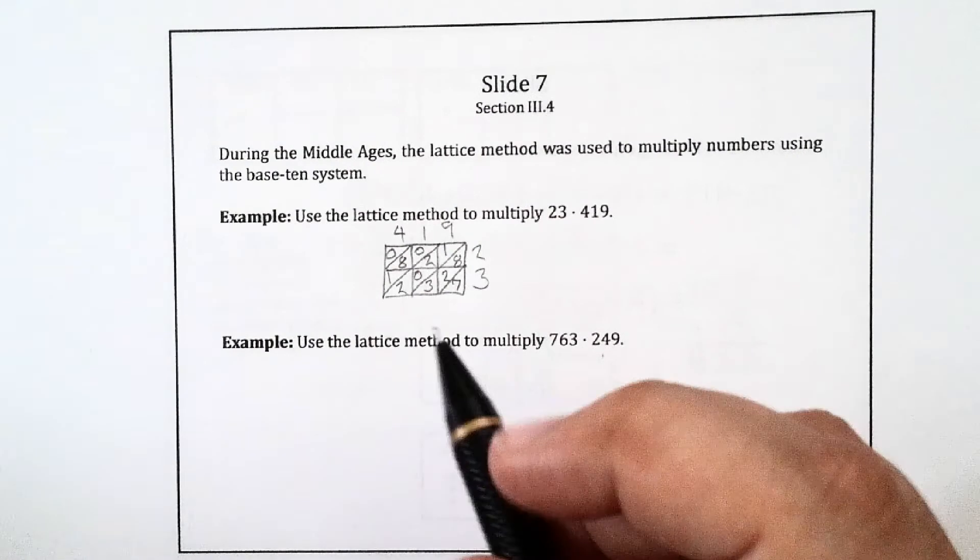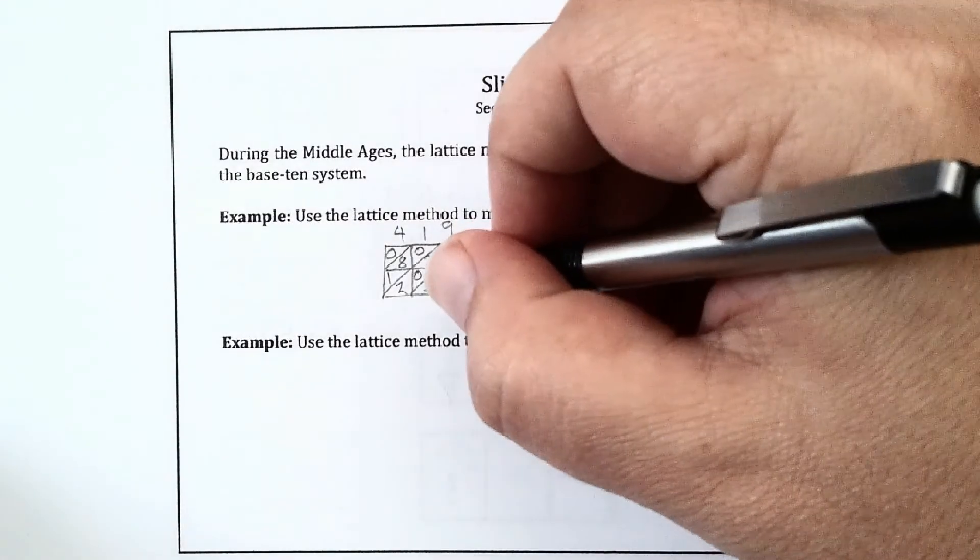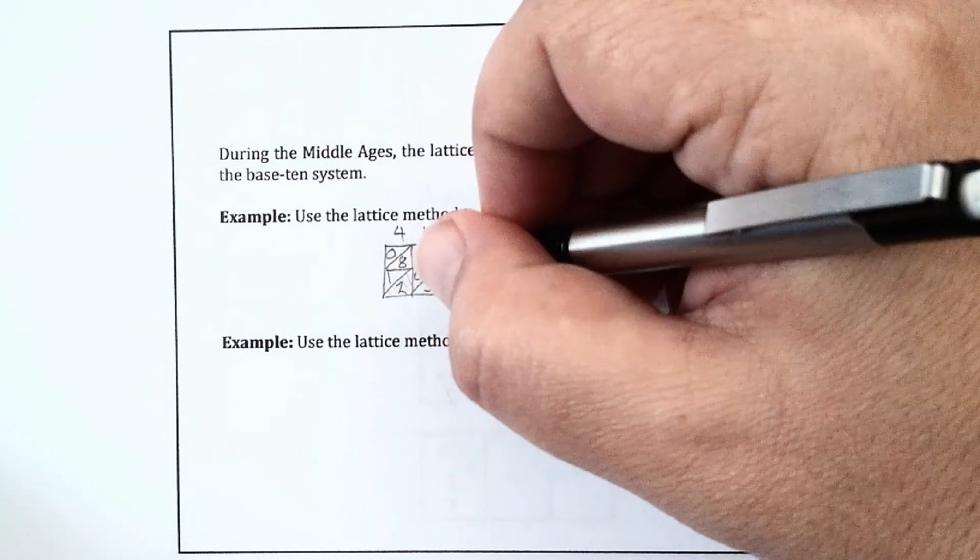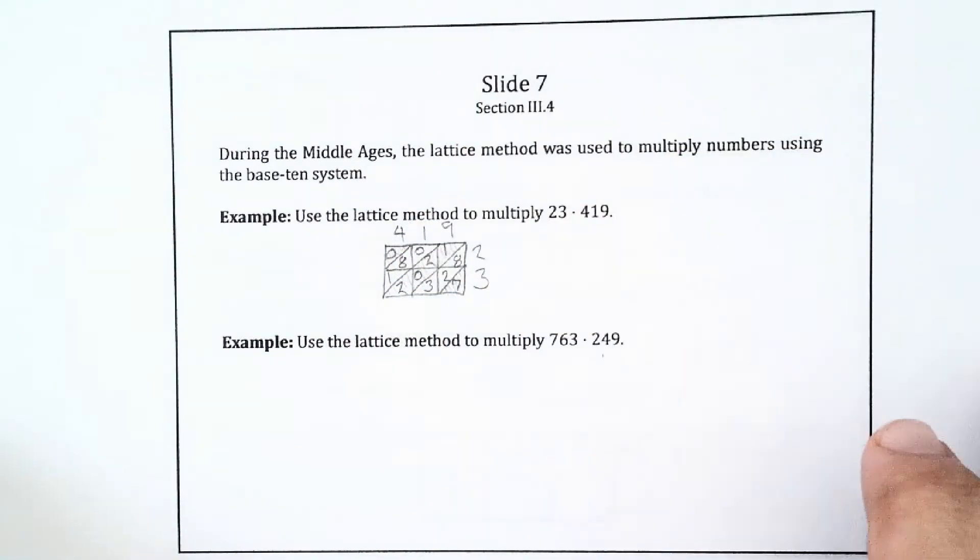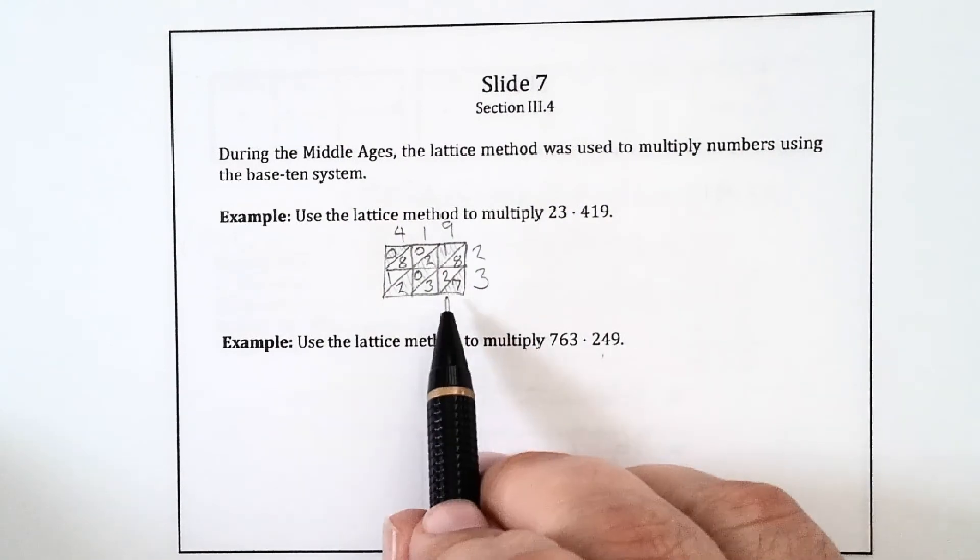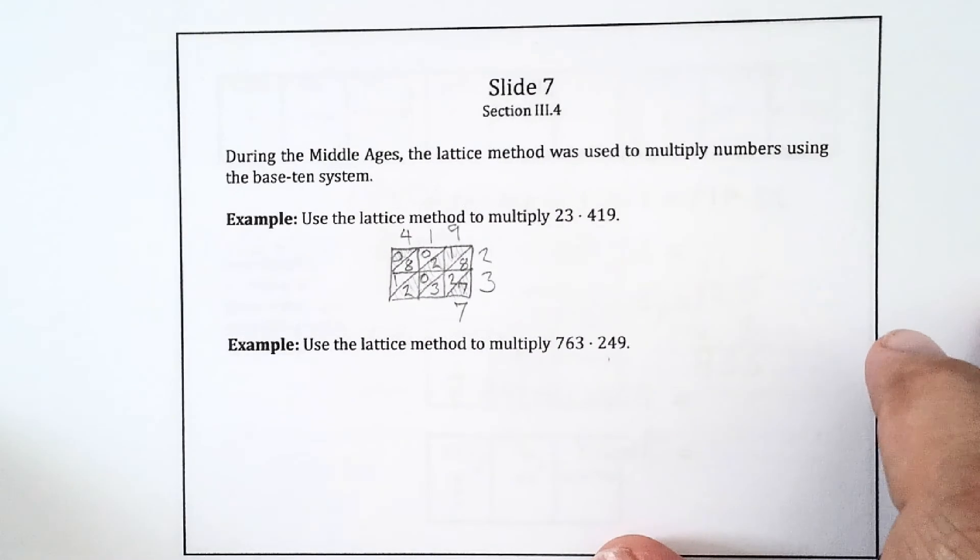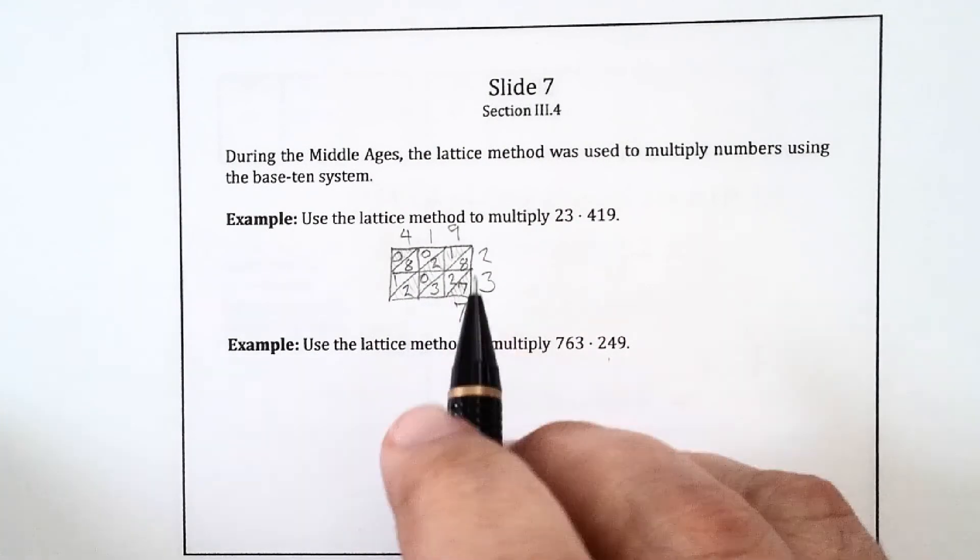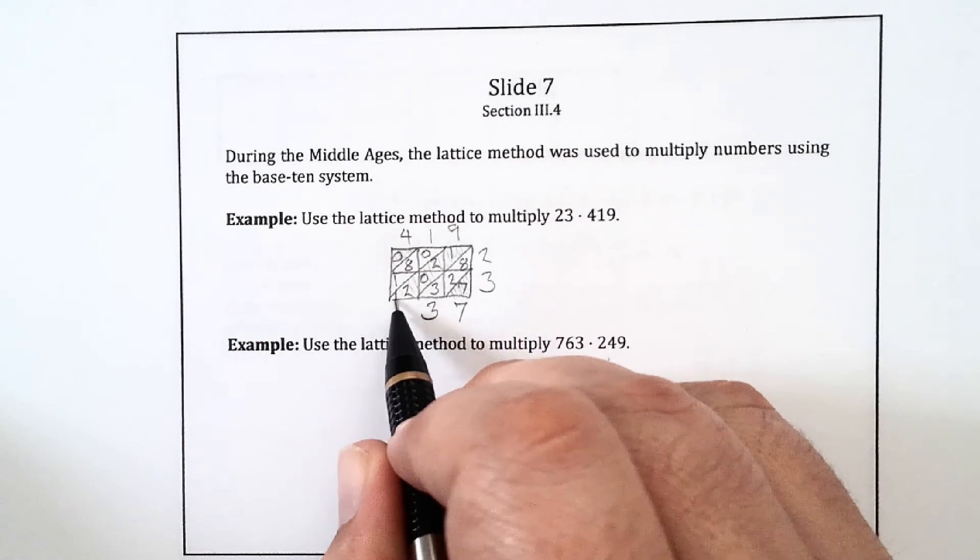Now I'm going to add down the diagonals, starting with the lower right-hand corner. And you don't have to do this, but let me kind of shade in every other diagonal so you can understand what I'm referring to here when I say add down the diagonals. I take this first diagonal, which is just the corner containing 7, and that just gives me 7. And then this next diagonal contains an 8, a 2, and a 3. I add those up and I get 13, so I put a 3 here, and then I carry that 1 to the next diagonal.